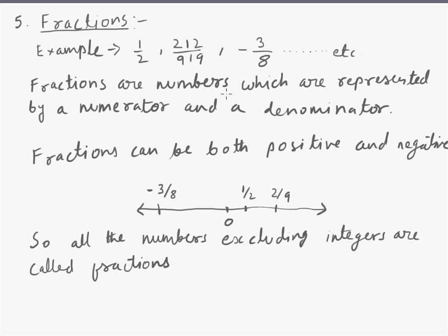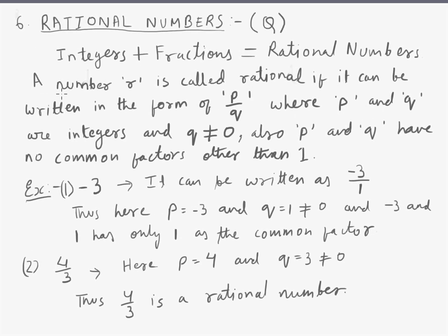So moving further, we come to numbers called fractions. Fractions are numbers which are represented by a numerator and a denominator. Example: 1 by 2, 212 by 919, minus 3 by 8, etc. Fractions can be both positive and negative. See here, there is representation of fractions on the number line. So all the numbers excluding integers are called fractions.